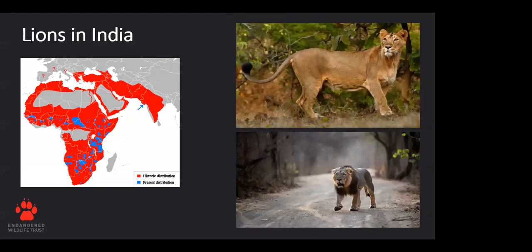Looking at this map, you can see where lions once historically occurred through parts of Europe, Asia, and much of Africa.